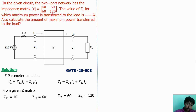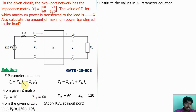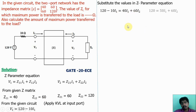From the Z-parameter characteristic equations, V1 = Z11·I1 + Z12·I2. Substituting the known values: V1 = 40·I1 + 60·I2. With V1 = 120, we get 120 = 50·I1 + 60·I2. Let us take this as equation 1.